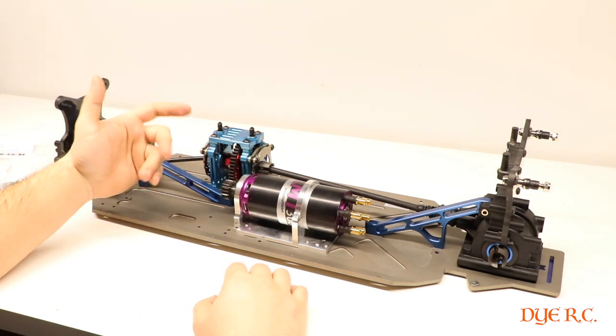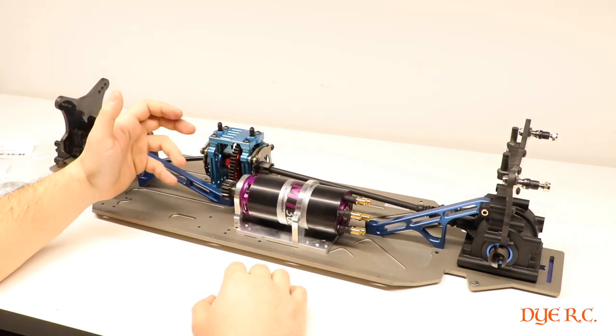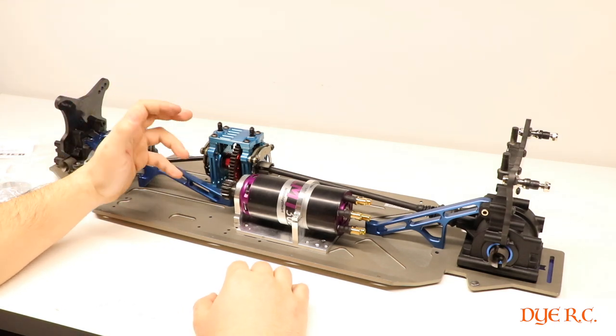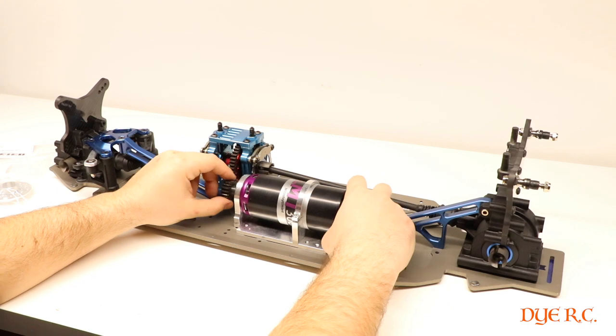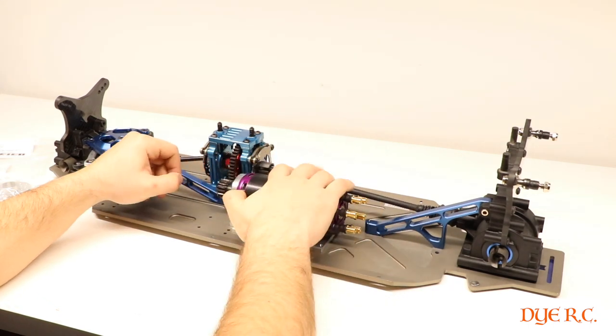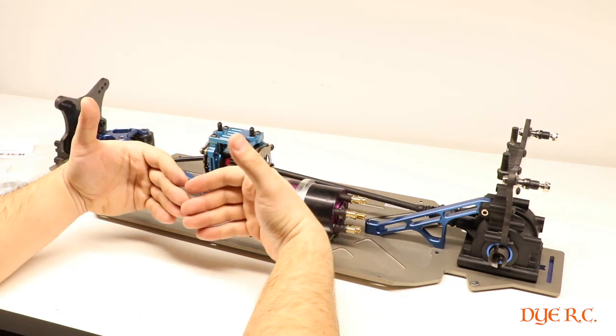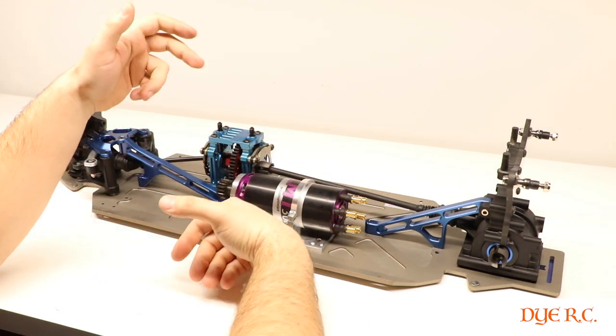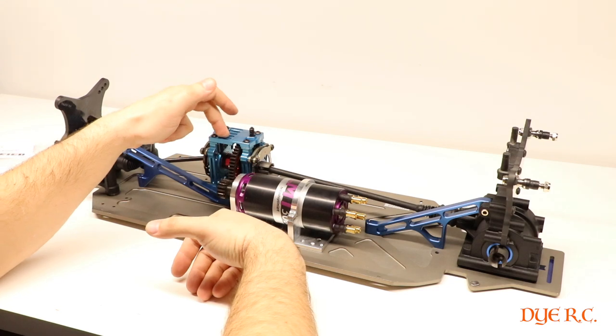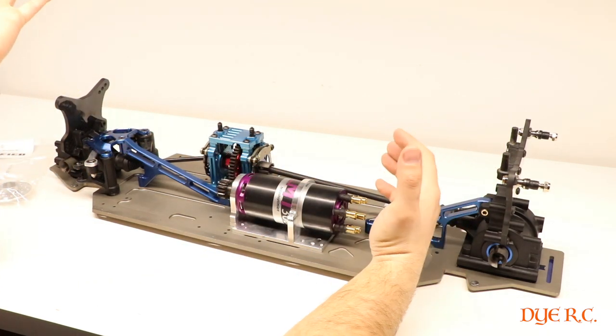When I get it all apart I'll show you which what you have to dremel off or grind down. I'll show you the before and after so that this conversion kit will work. Again it's the MGM conversion kit and the modified RC, they don't meet together really nicely.